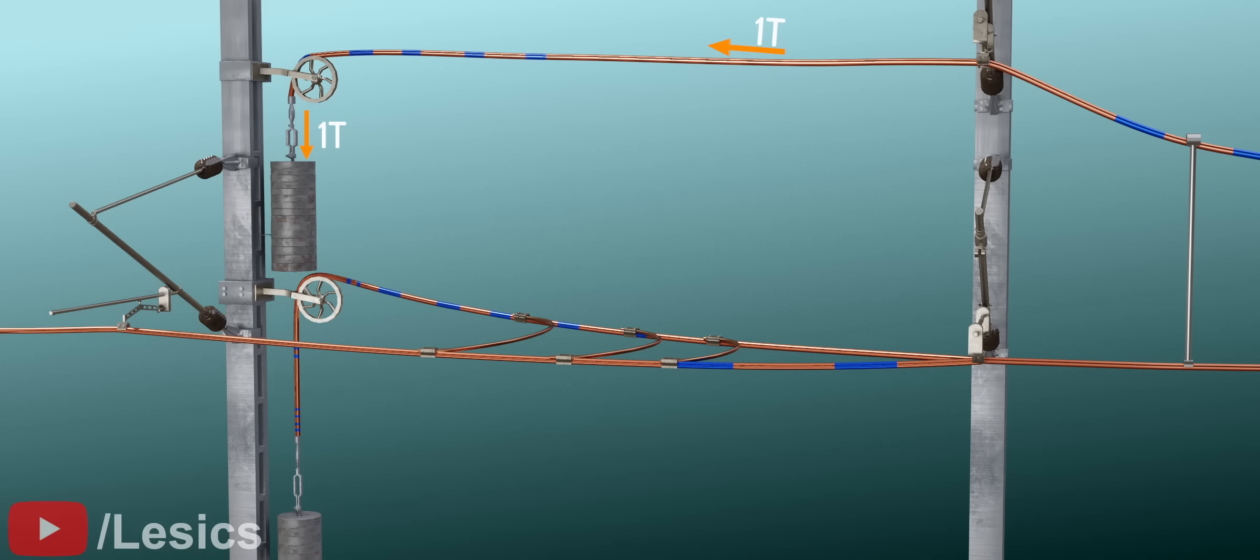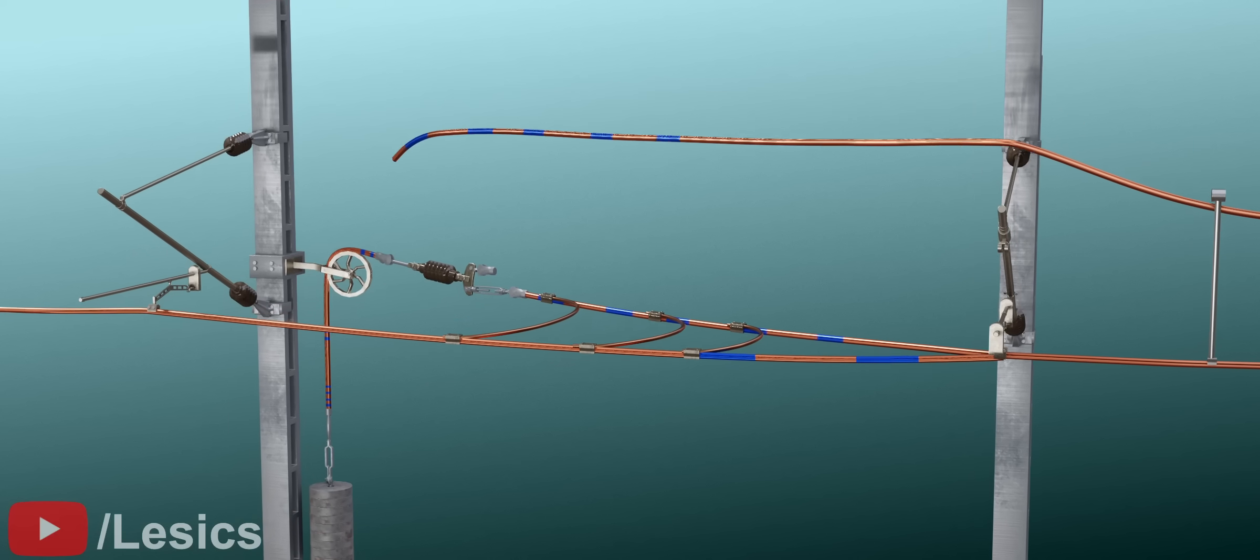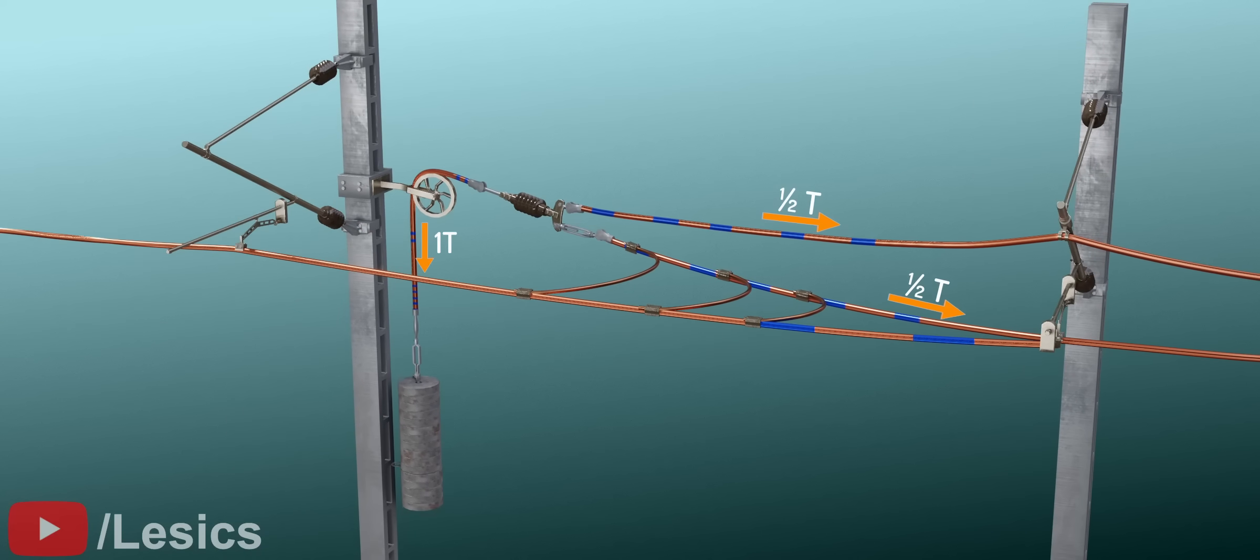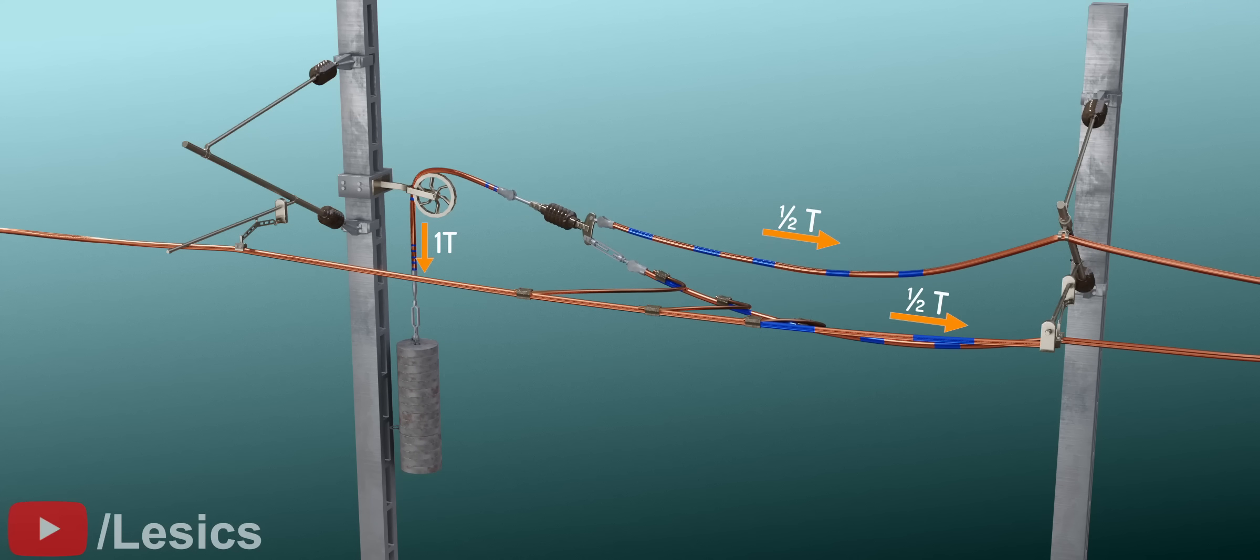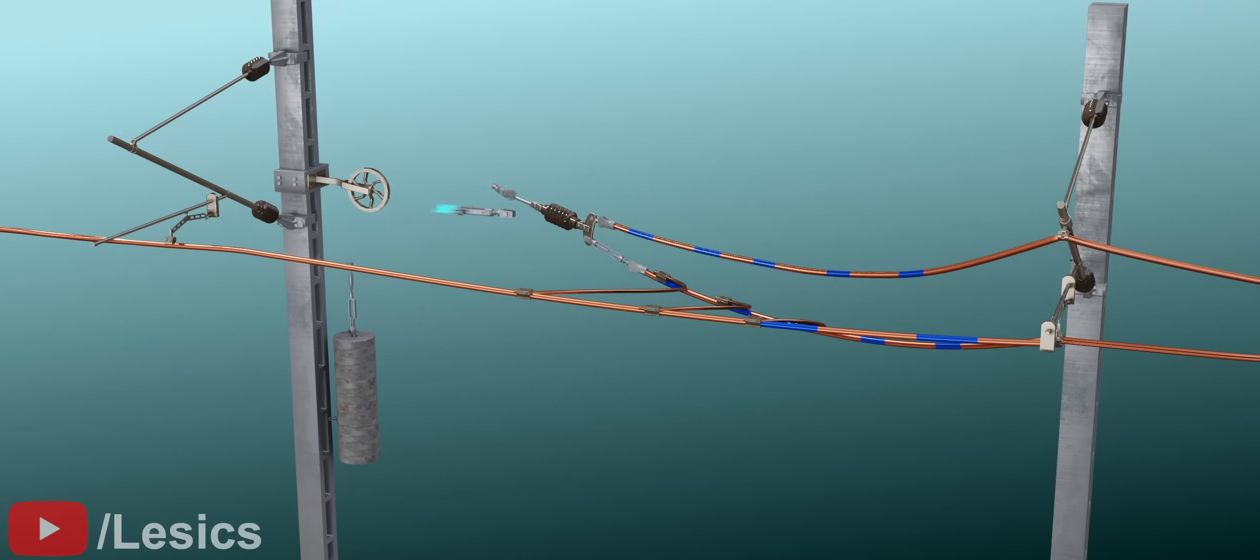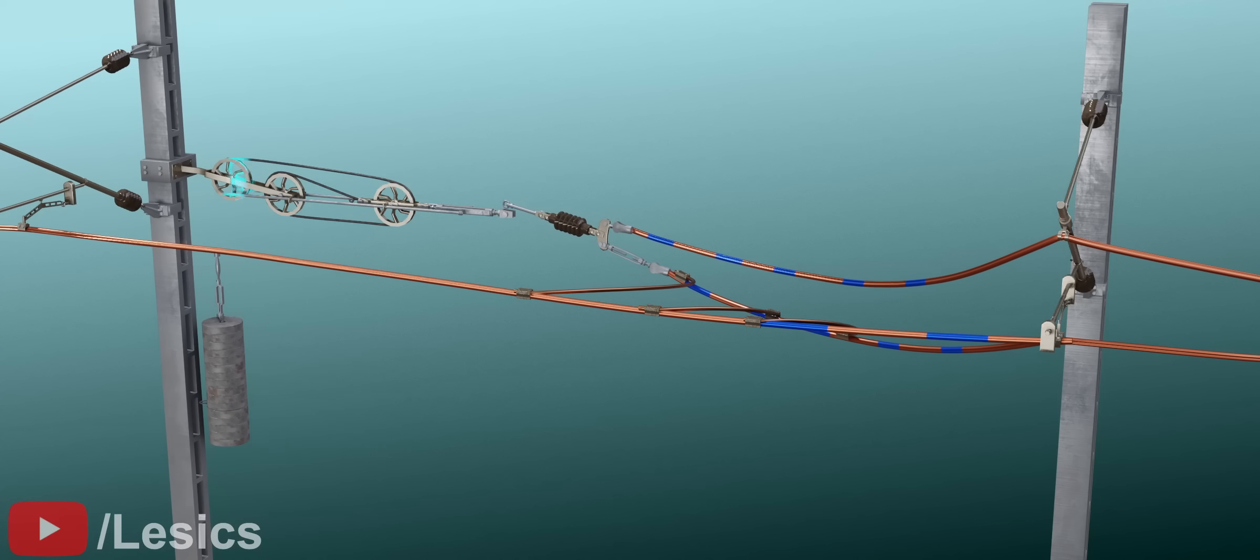We can simplify this system by attaching the ends of both wires to the common pulley. However, the tension in the wires must be the same as it was in the earlier design. Does this mean we need to add more weights? Obviously, this is not a good idea.